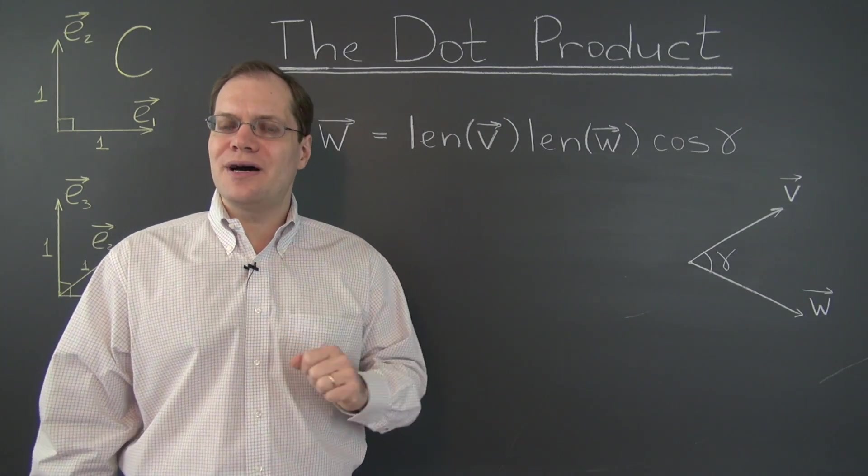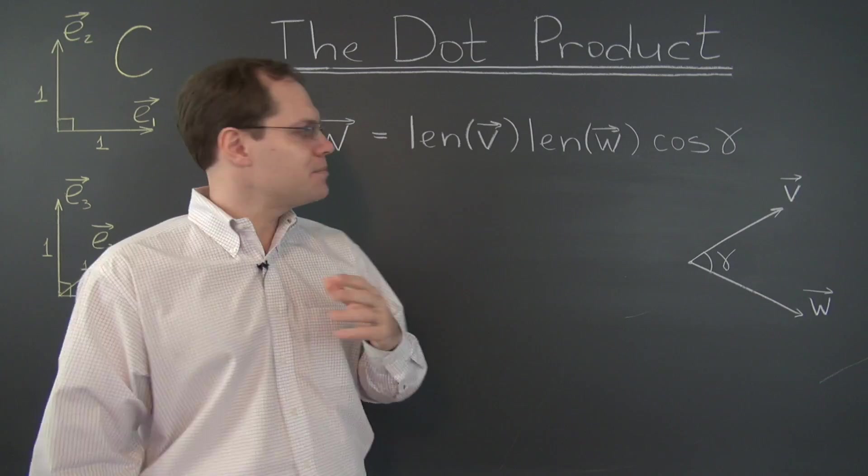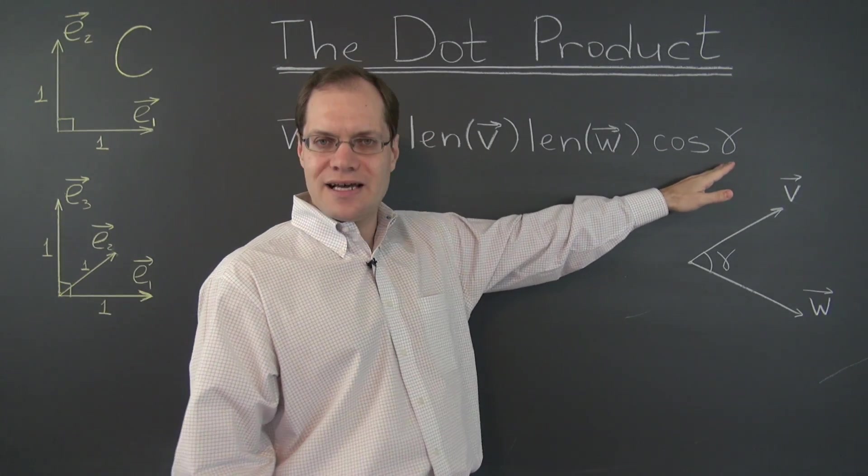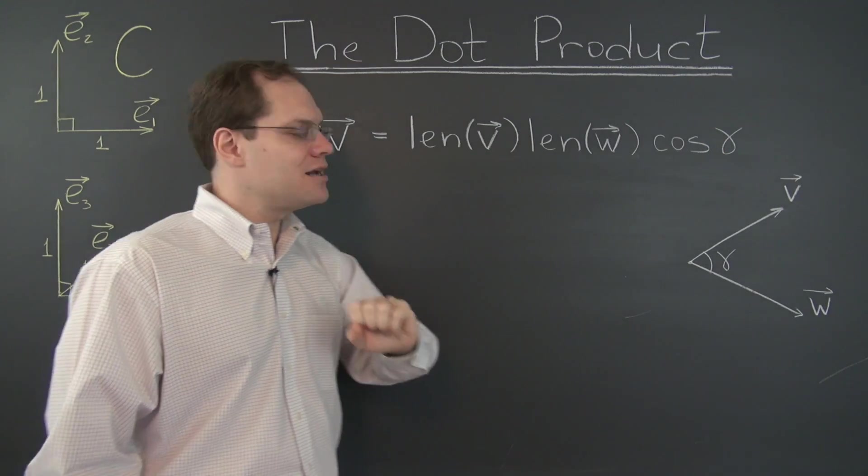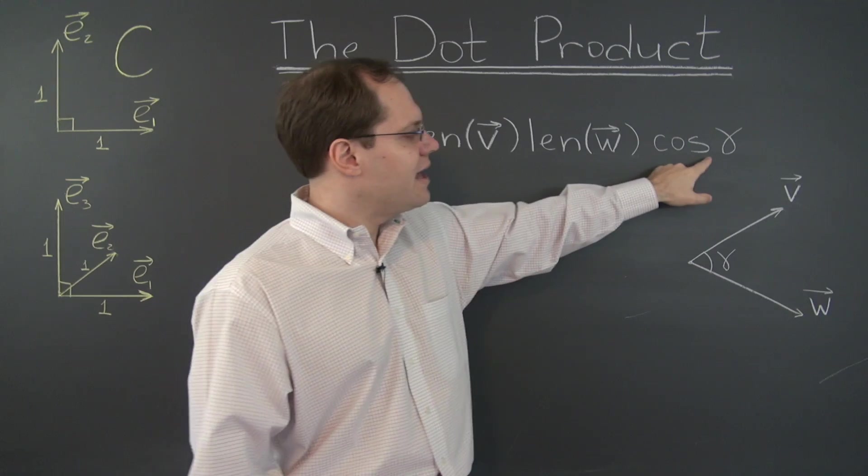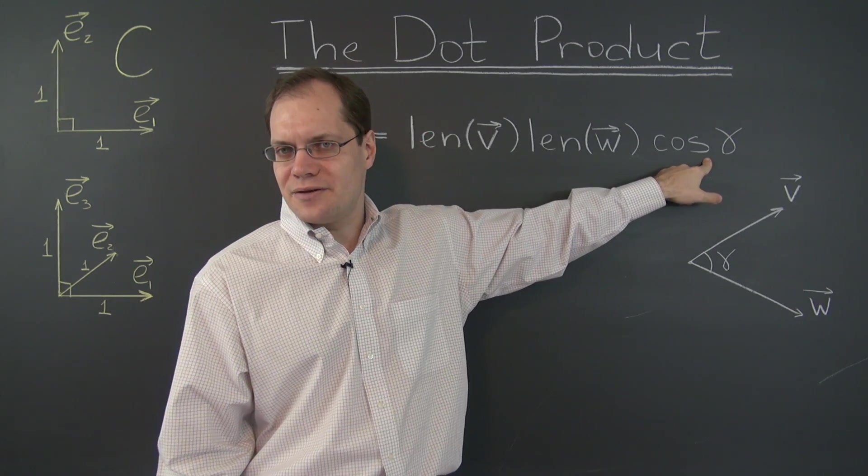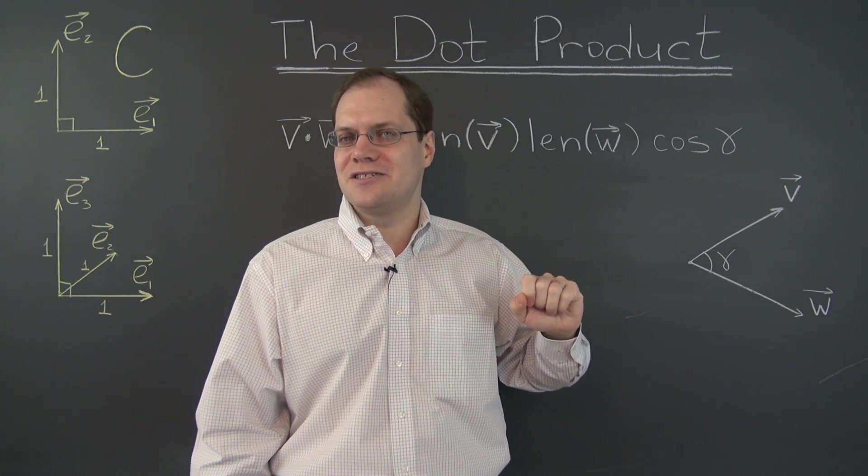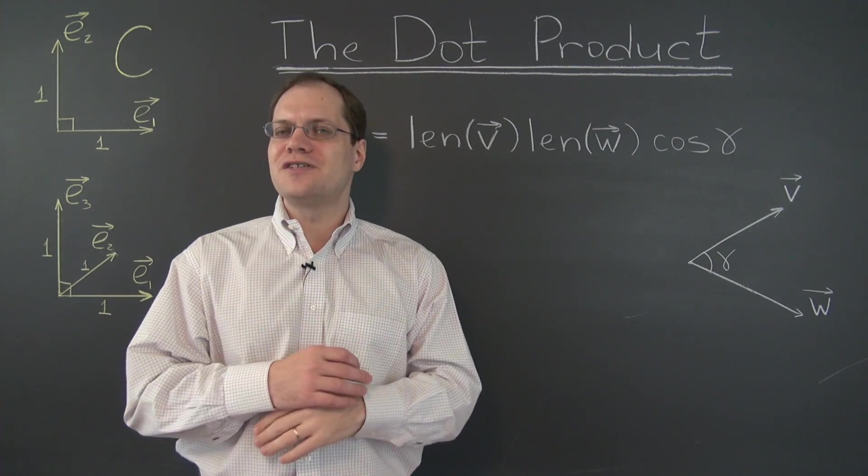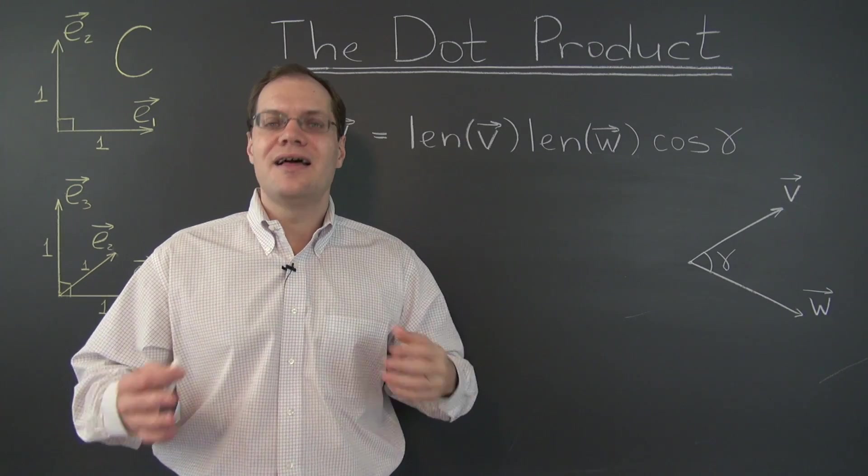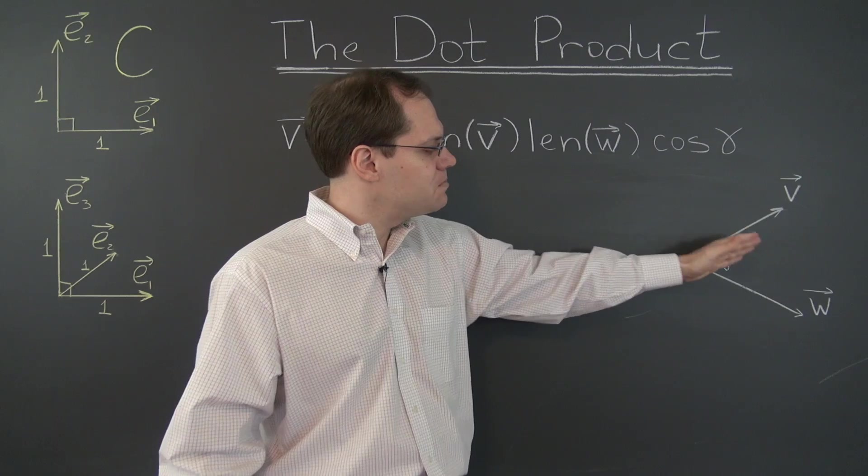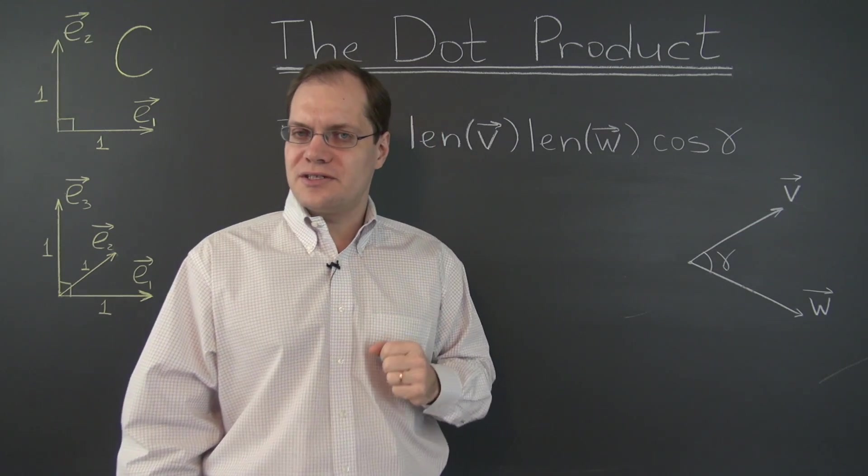Let's talk about the definition of the dot product. The dot product of two vectors is defined to be a number that is the product of three numbers: the length of one vector, the length of the other, and the cosine of the angle between them. That's the definition. My first remark is that I think this definition on the surface makes no sense at all, because this quantity does not correspond to any geometric quantity whatsoever.